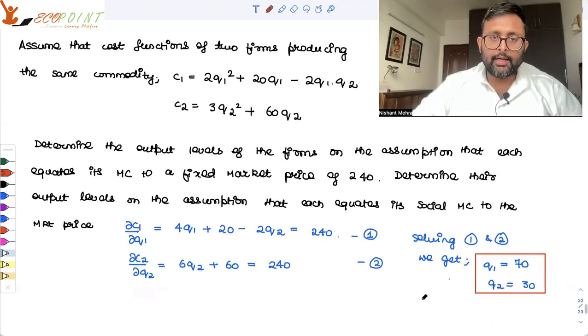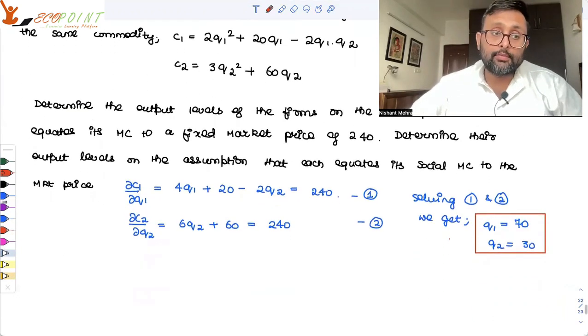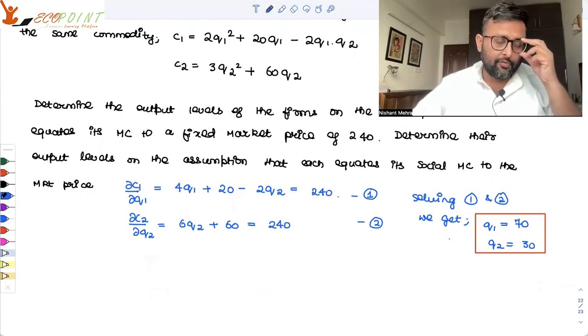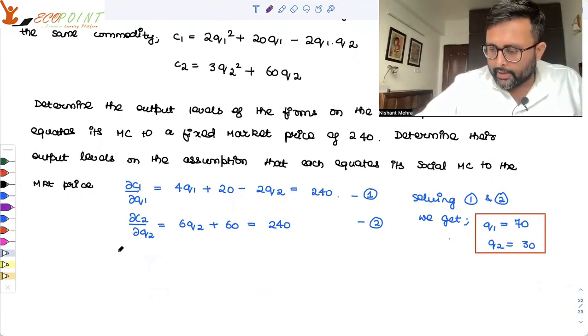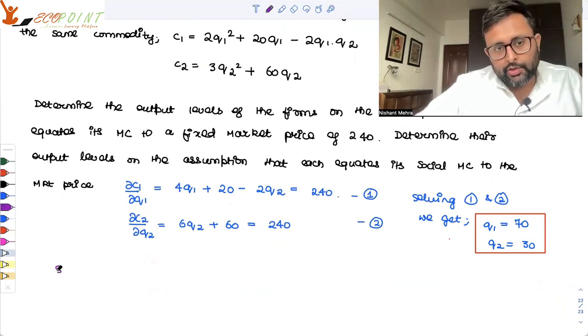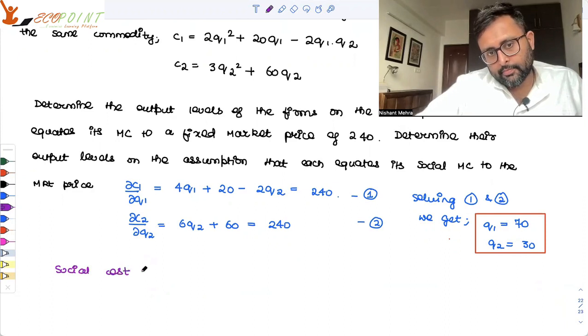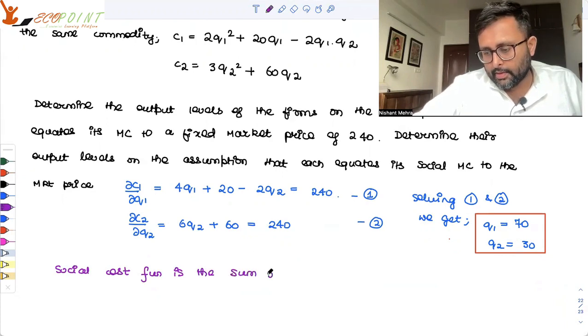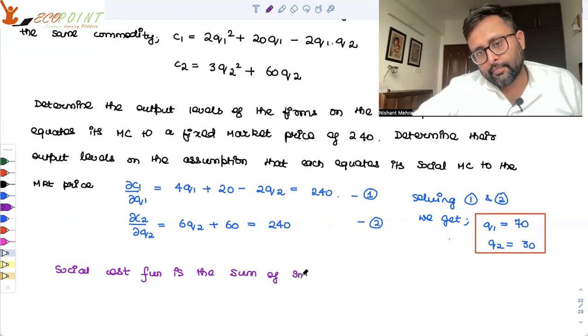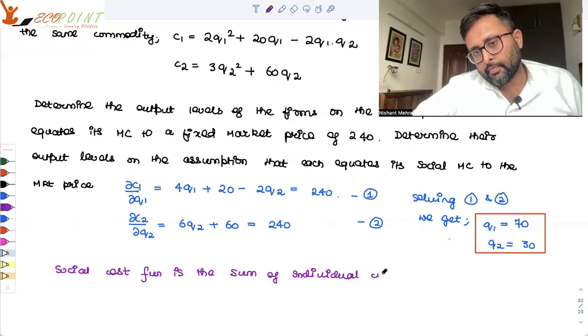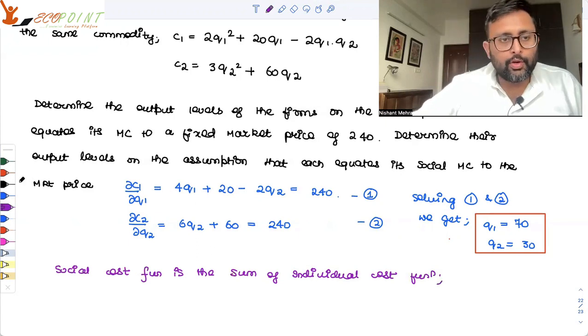Q1 as 70 and Q2 as 30. What about social cost? So the social cost function is going to be the sum of your two private cost functions. Is the sum of the individual cost functions. So the social cost function is the sum of individual cost functions.